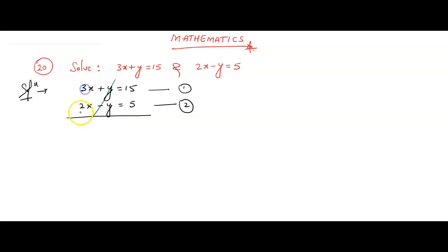Now, 3x plus 2x equals 5x. I am adding these terms now. Plus y minus y get cancelled. 3x plus 2x is 5x equals 15 plus 5 is 20.